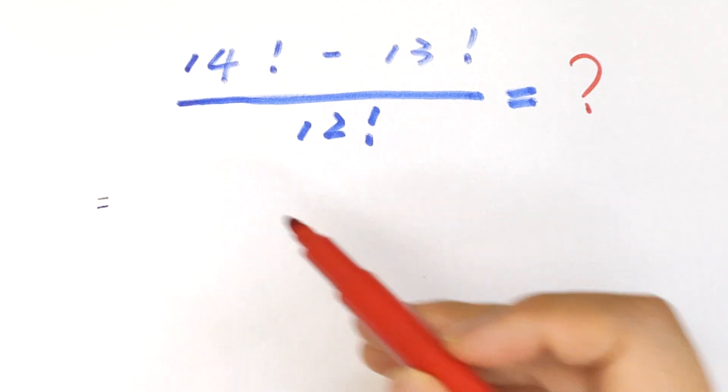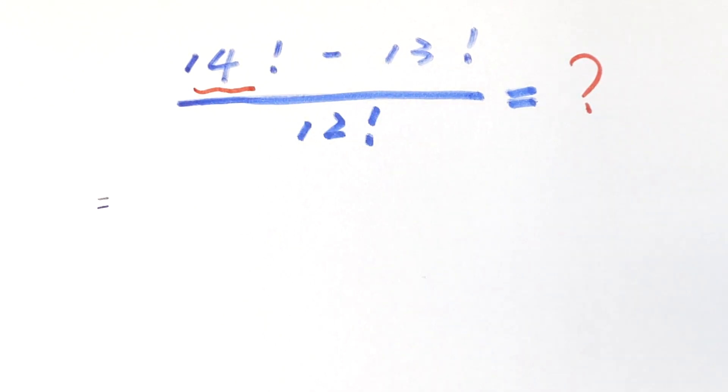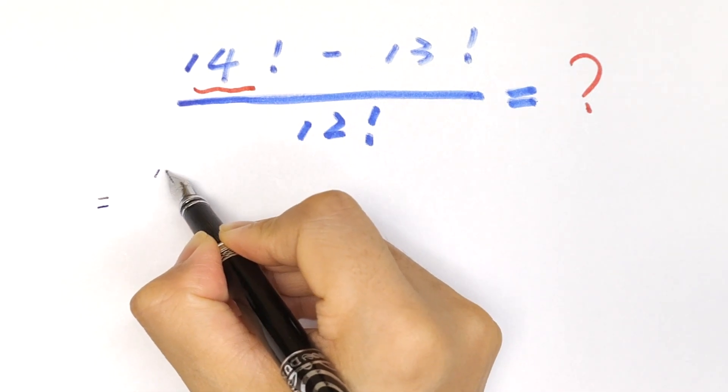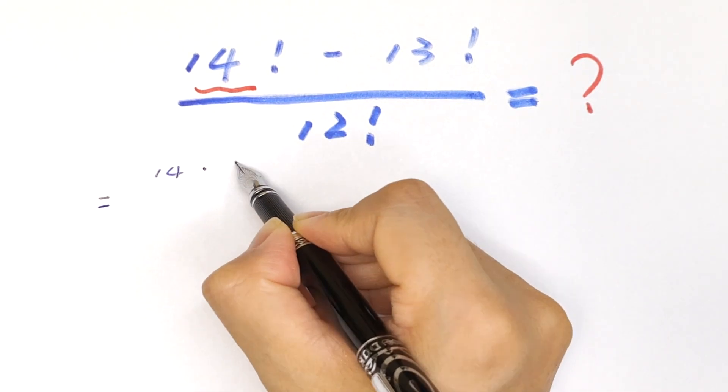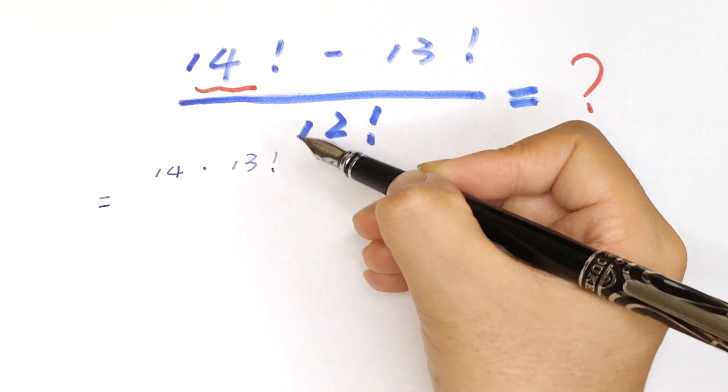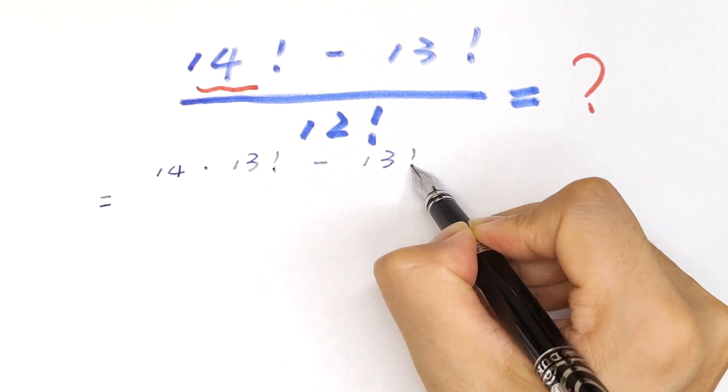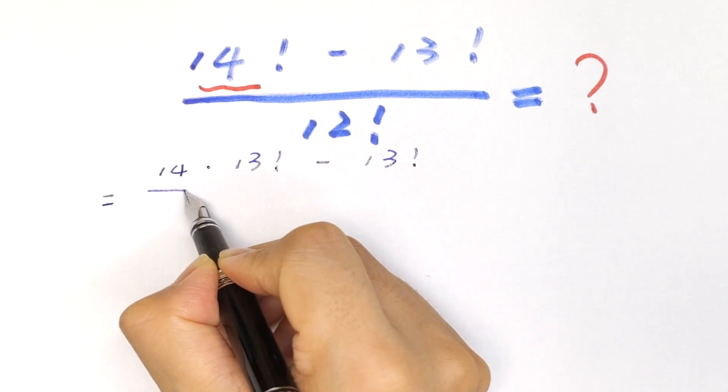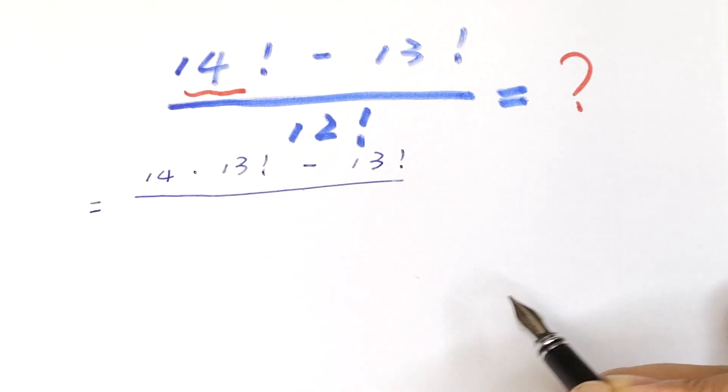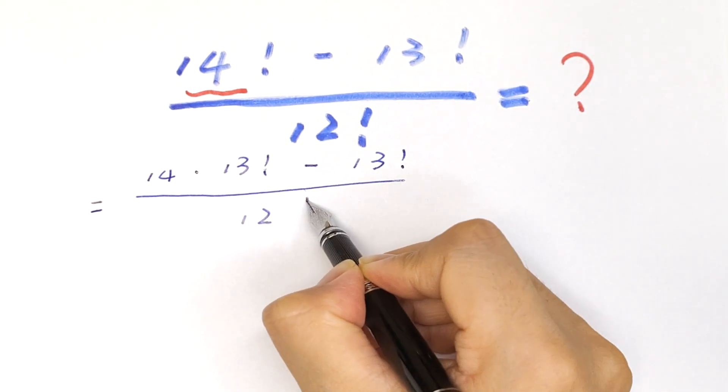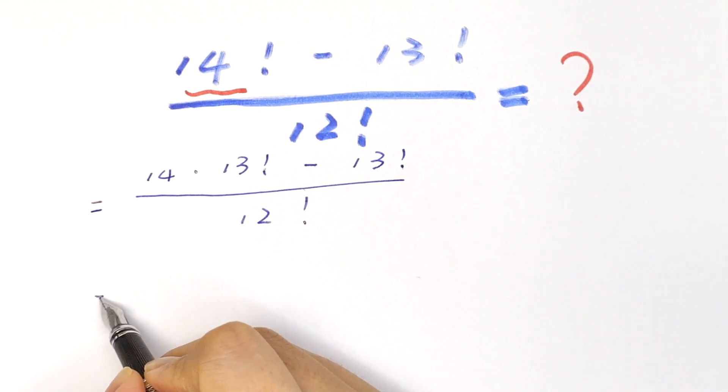14 factorial is the same as 14 times 13 factorial minus 13 factorial, divided by 12 factorial. It will be equal to...